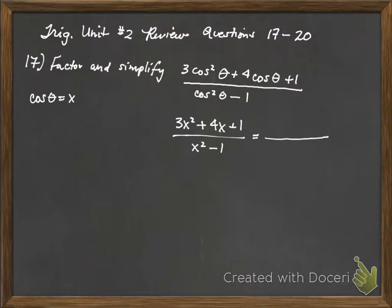If you use trial and error, the AC method, whatever your choice is, you will get 3x plus 1 times x plus 1, and always, always FOIL that out to make sure you get back to the original trinomial. And then in the denominator, that is the difference of perfect squares, so this becomes x plus 1, x minus 1.